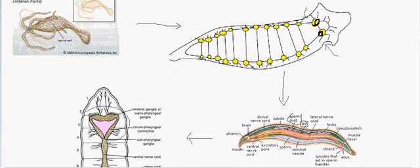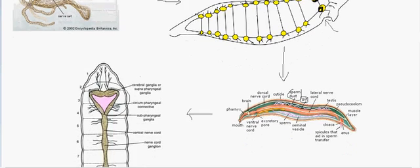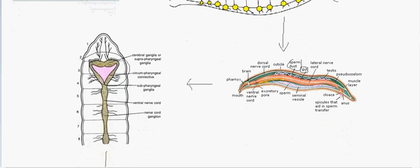In phylum Nematoda, the brain is starting to develop further. You can see the ventral nerve cord running along the body. After Nematoda, the earthworm shows even more complex brain development.